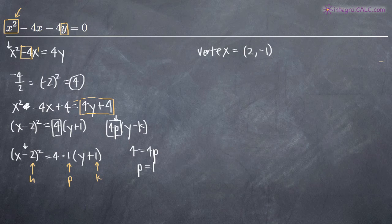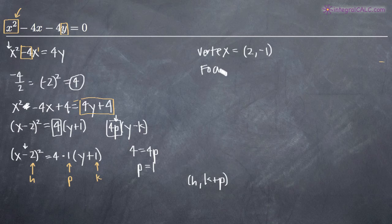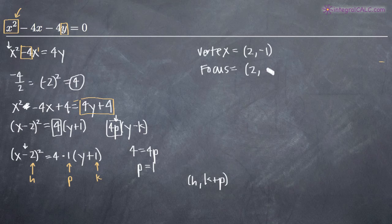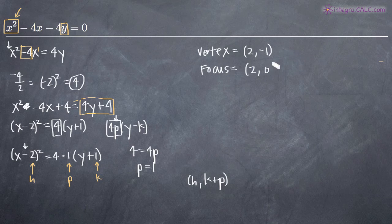From the chart, the focus is at (h, k plus p). We know h is positive 2, so the x-coordinate of the focus is 2. The y-coordinate is k plus p: negative 1 plus 1 equals 0. So the focus is at (2, 0).